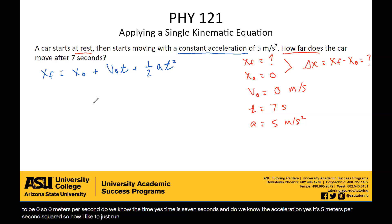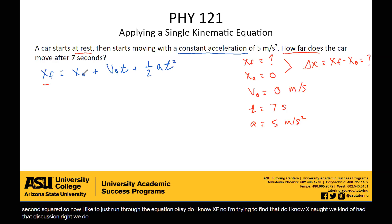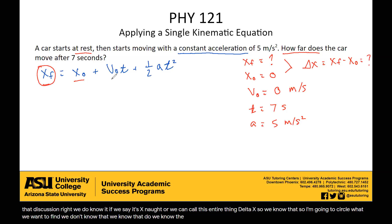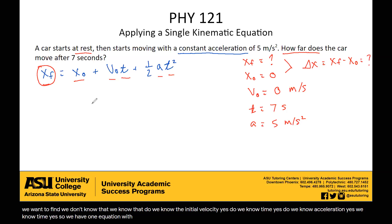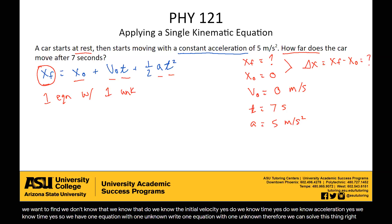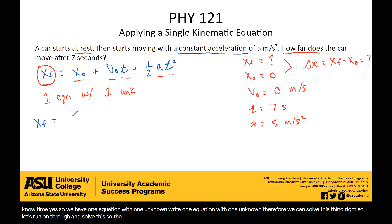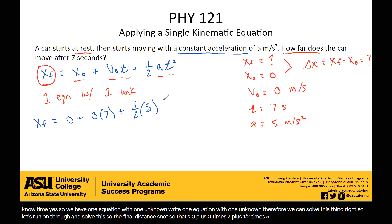So now let's run through the equation. Do I know xf? No, I'm trying to find that. Do I know x-naught? Yes. Do I know the initial velocity? Yes. Do I know time? Yes. Do I know acceleration? Yes. We have one equation with one unknown, so we can solve this.